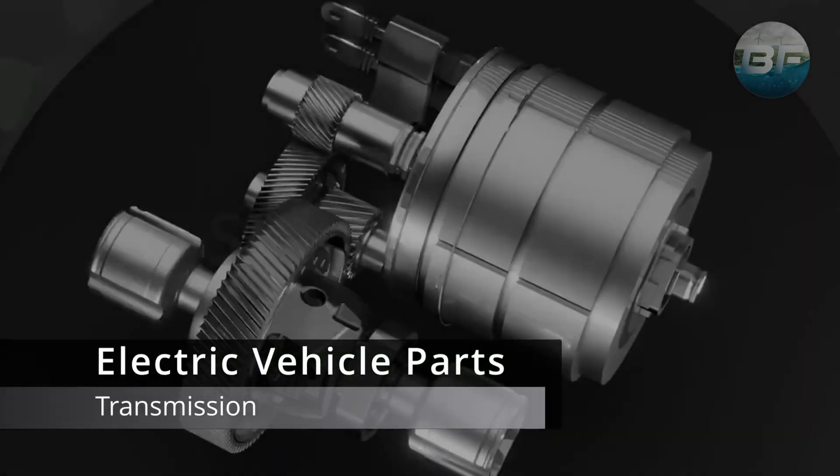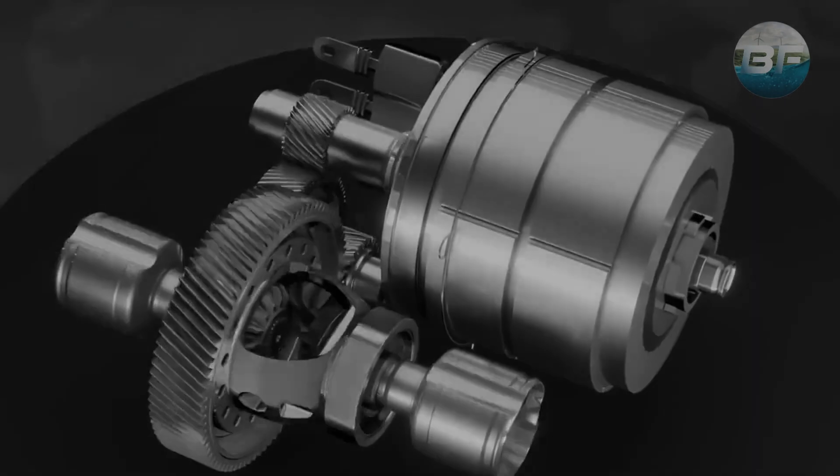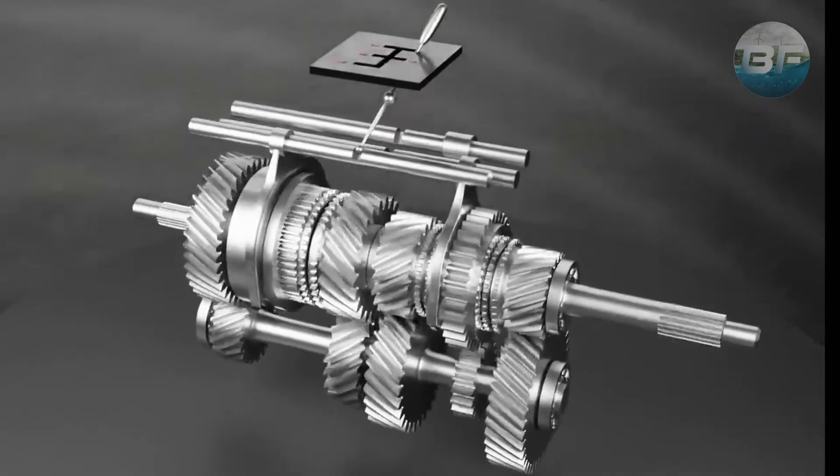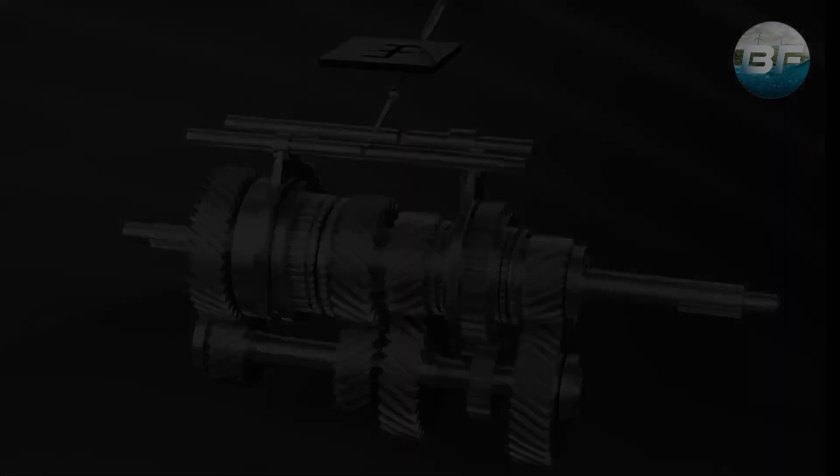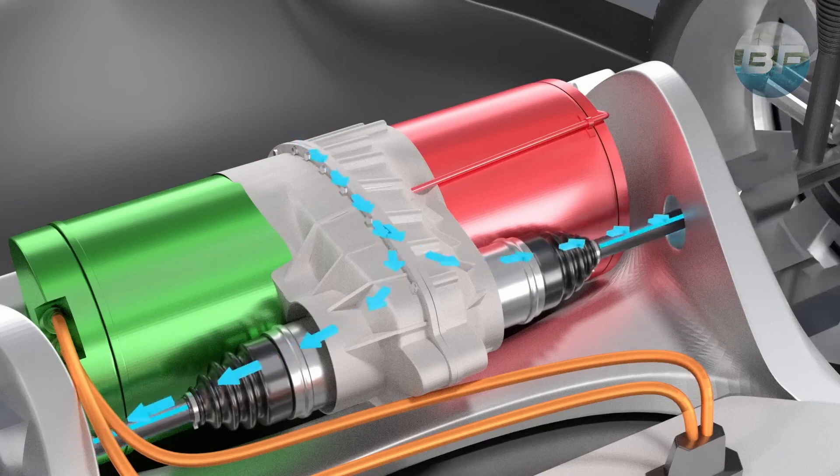The simplicity of the transmission in an electric vehicle is due to the unique characteristics of the electric motor. Unlike a gasoline engine, which requires a complex transmission system to shift gears, the electric motor delivers maximum torque instantly and continuously, making it unnecessary to change gears.